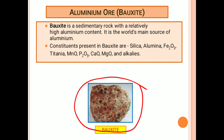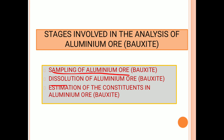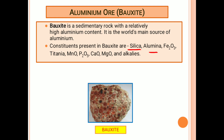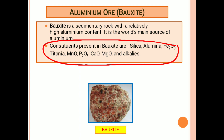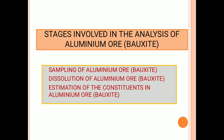Here you can observe the image of bauxite. The same stages are involved for the analysis of aluminum ore: first sampling, next dissolution, then estimation. All the constituents in bauxite are determined using the same methods as discussed for iron ore, manganese ore, chromite ore, and phosphate rock ore — almost all constituents are related to those four ores, so the determination methods are the same as discussed earlier.